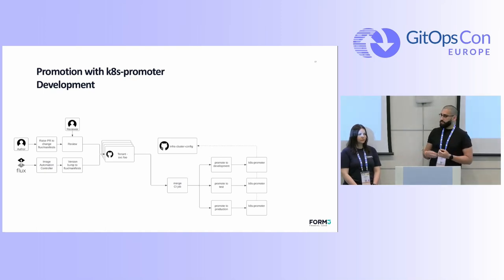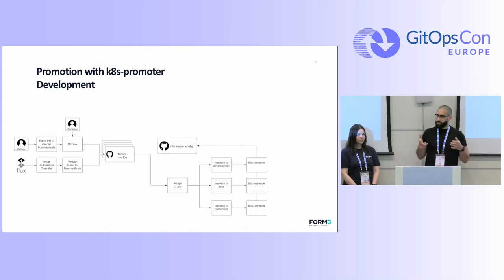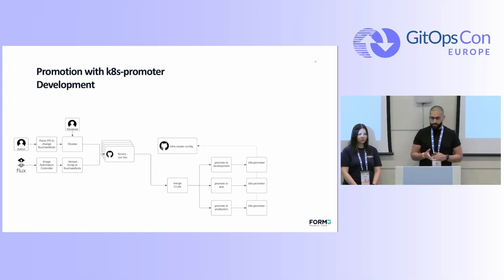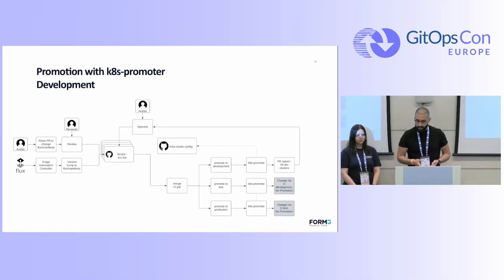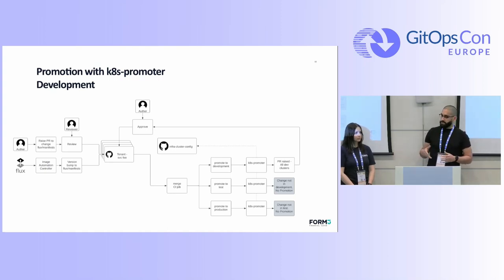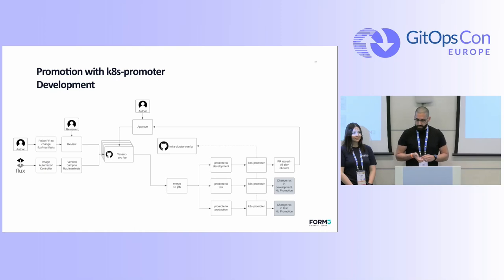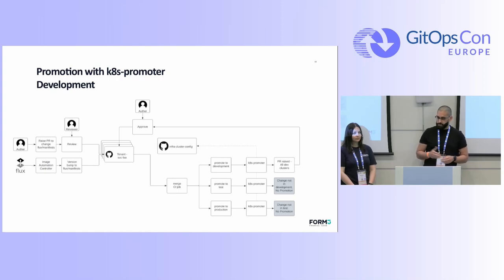When the tool runs, the first thing it does is clone the infrastructure cluster config repo, which is essentially where we have the cluster definition across our fleet. For promotion to dev, it will group all of the changes for the dev clusters in one go and raise a PR where the author approves it. For the test task, it will observe that there hasn't been any promotion to development yet, so it won't do any promotion. The same happens for production.